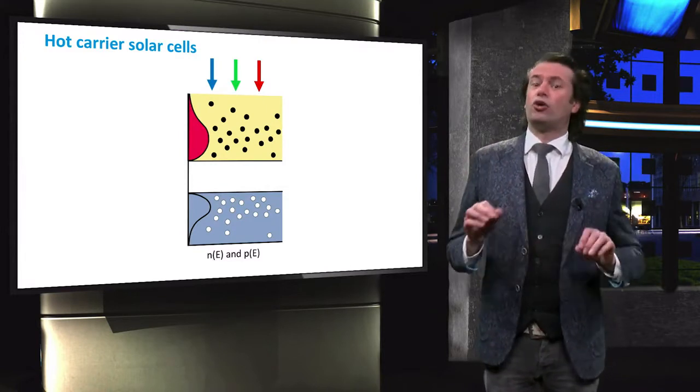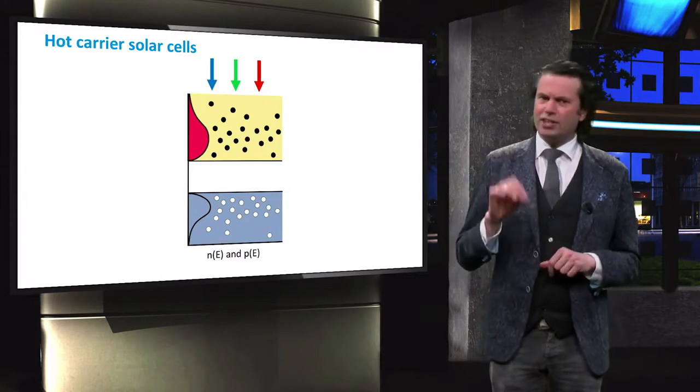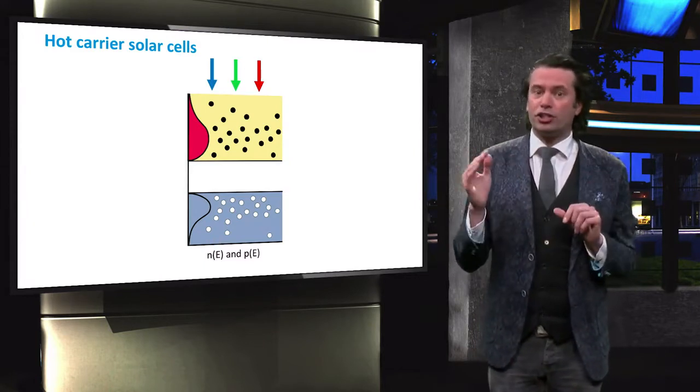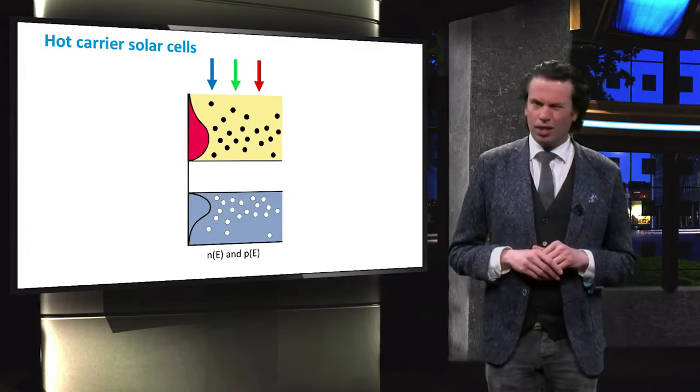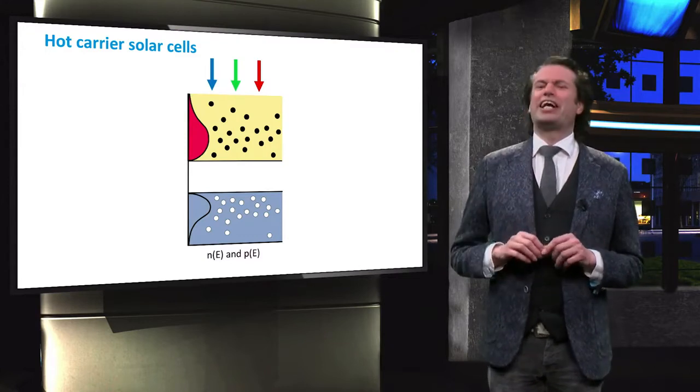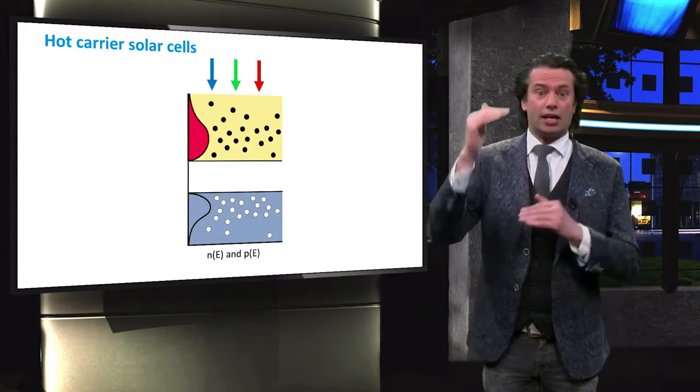These charge carriers are called hot electrons and hot holes. It only takes a few picoseconds for the hot charge carriers to relax back to the edges of the electronic bands. The idea of hot carrier cells is to collect the charge carriers as long as they are still hot.